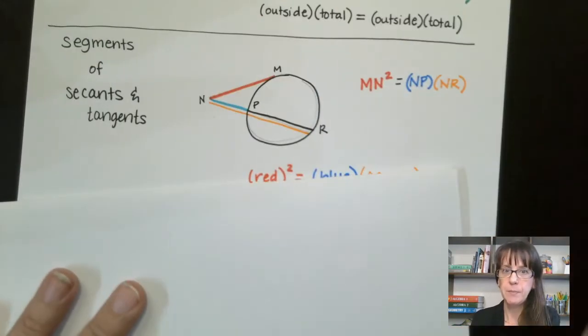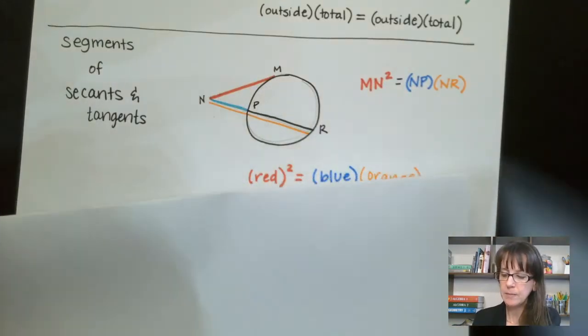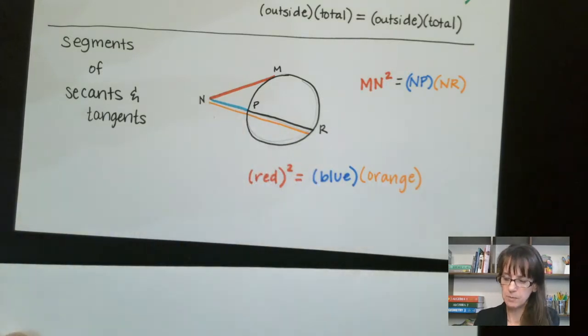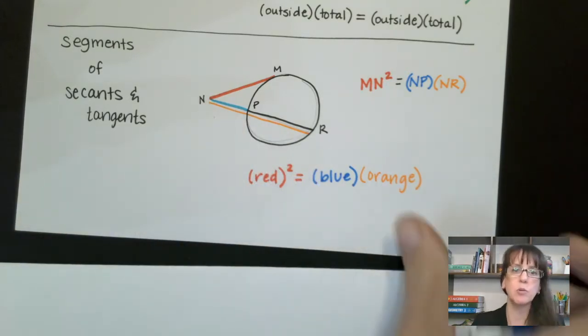And then for our third one, we have this outside bit squared equals the outside bit times the total, similar to the one right above. So let's take these rules and pause, write those down if you need to, and then we're going to apply them.